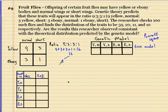We expect 9 to be yellow and normal, we expect 3 to be yellow and short, we expect 3 to be ebony and normal, and we expect 1 to be ebony and short.